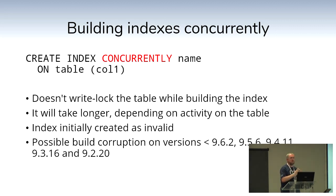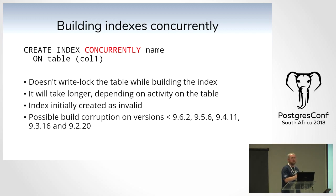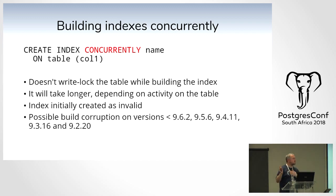Indexes can be built concurrently. Normally building an index locks the table for the duration. With CONCURRENTLY it doesn't take a write lock — it creates the index, marks it as invalid, then builds it in the background. When done it handles any changes that occurred since it started, then marks the index as valid. The query planner won't use an invalid index. It often takes a bit longer because of multiple passes and lock contention. Be aware that in some older Postgres versions there is a possible build corruption when using concurrent indexes.